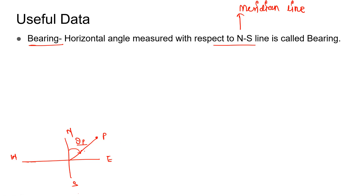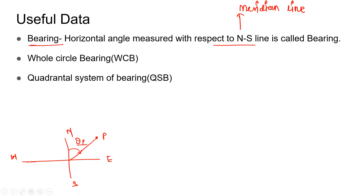While measuring the bearing angle, we have two systems in compass survey. The first is whole circle bearing (WCB) and the second is the quadrantal system of bearing (QSB). In whole circle bearing, as the name suggests, we cover one complete cycle, so the angle varies from 0 to 360 degrees. In the quadrantal system, we consider one quarter, so the angle varies from 0 to 90 degrees.